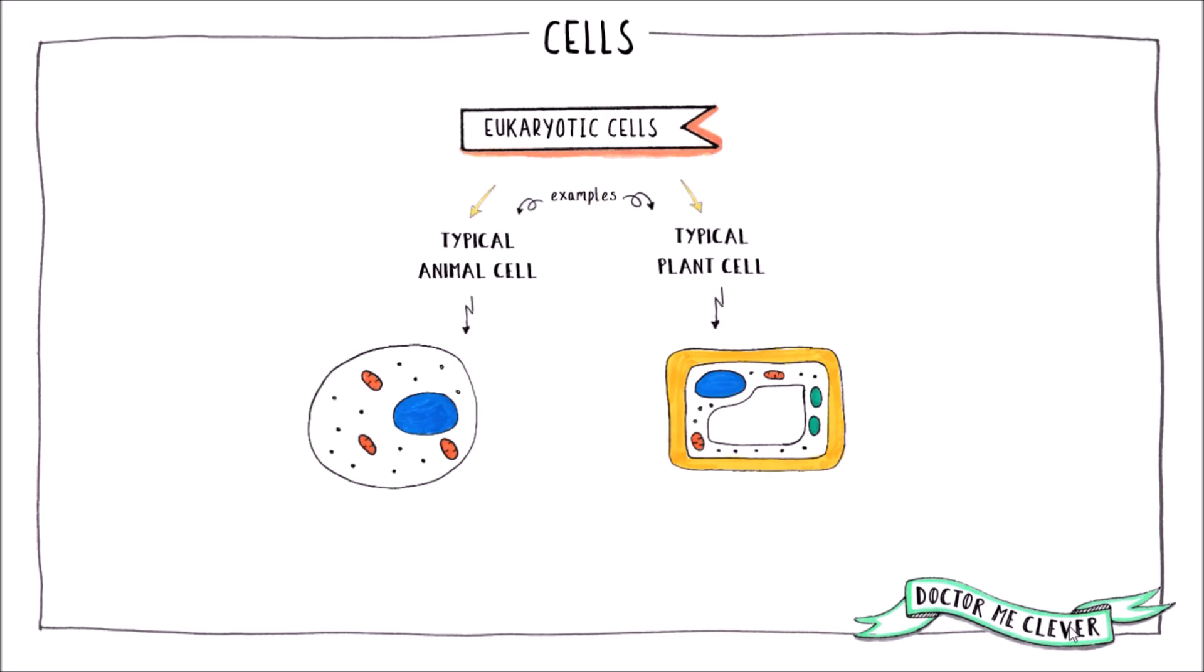You also need to know which structures are unique to plant cells and not found in animal cells. So both cell types contain a nucleus where their DNA is held.